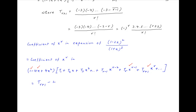This involves the coefficient of x square in the first bracket multiplied by the coefficient of x raised to the power r minus 2 in the second bracket, resulting in plus 4 times t_{r-1}.